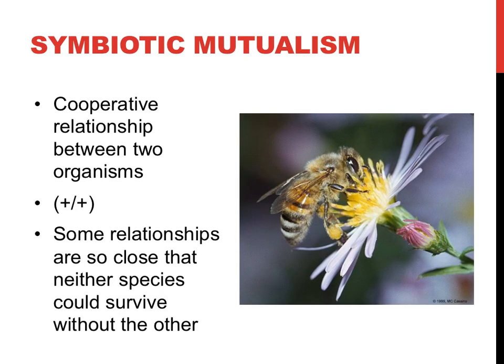The prefix syn or sim means united or together, and the term biotic means life — put the two together and you get the term symbiotic, meaning living together. Symbiotic mutualism is a long-term relationship between two organisms where both benefit, hence the plus-plus on this slide. Examples include a bee and a flower, or a human and the bacteria in the human intestines. Bees help pollinate flowers while flowers provide food for bees. Humans provide bacteria with food while bacteria provide humans with essential nutrients such as vitamins. Both examples are win-win.